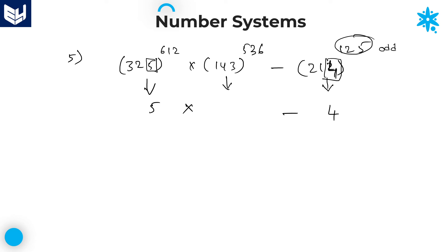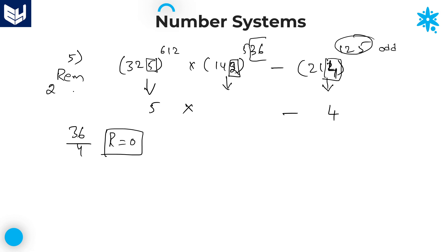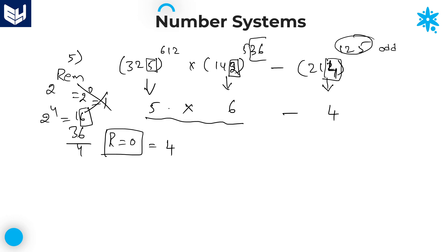Instead of 143 let's take 142 (ending with 2, third category). The power value is 536; take the last two digits: 36. Divide 36 by 4: the remainder is 0. Whenever the remainder is 0, take it as 4 instead. Therefore 2 power 4 = 16, and the required units digit is 6.